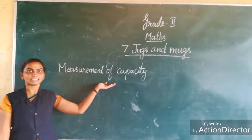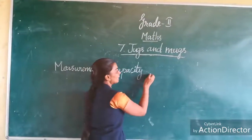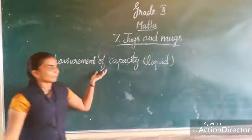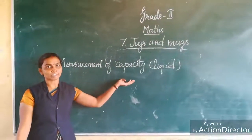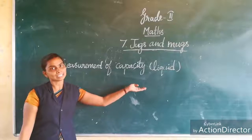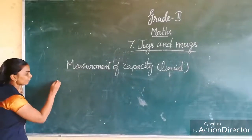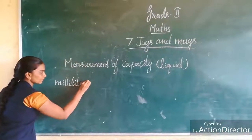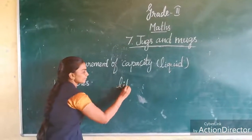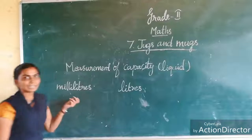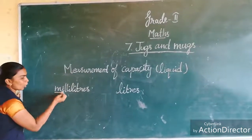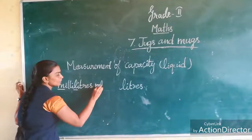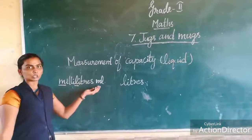Measurement of capacity is about measuring the quantity of liquid. Capacity means to measure the quantity of liquid in milliliters and liters. Milliliters we denote as 'ml' — that is small m and small l.